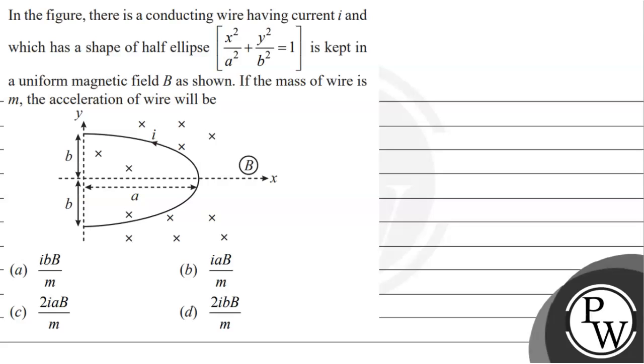Hello, let's read this question. In the figure, there is a conducting wire having current I and which has a shape of half ellipse: x² / a² + y² / b² = 1, kept in a uniform magnetic field B as shown. If the mass of wire is M, the acceleration of wire will be...